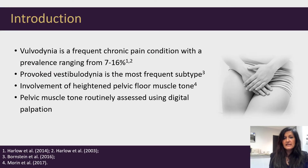Vulvodynia is a frequent chronic pain condition with a prevalence ranging from 7 to 16%. The most common subtype, provoked vestibulodynia, known as PVD, has been associated with heightened pelvic floor muscle tone.